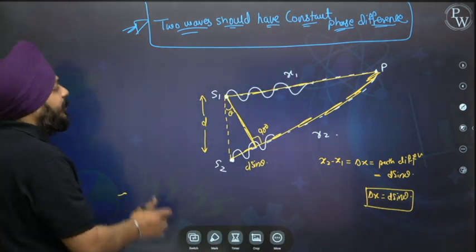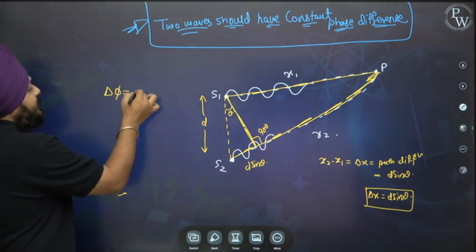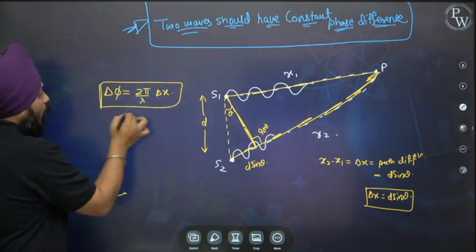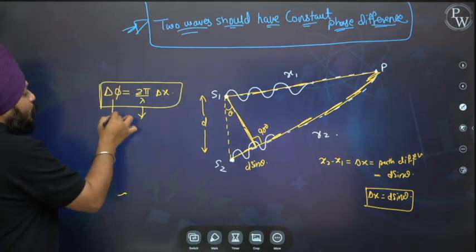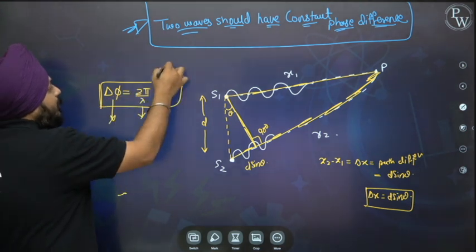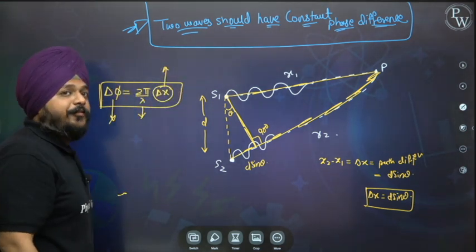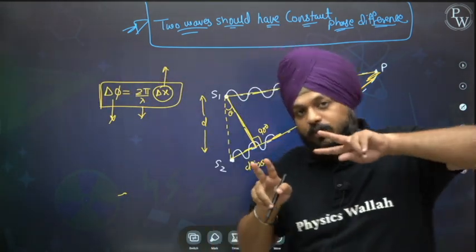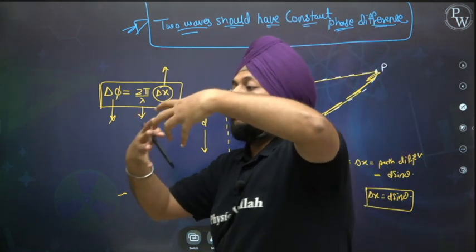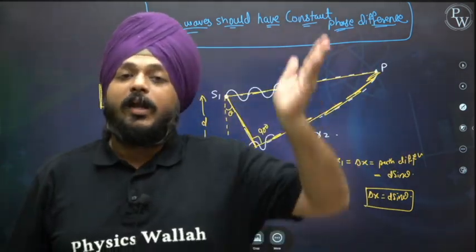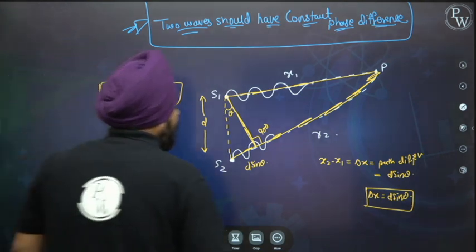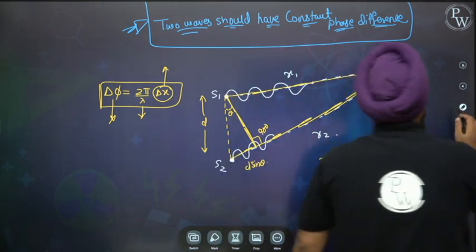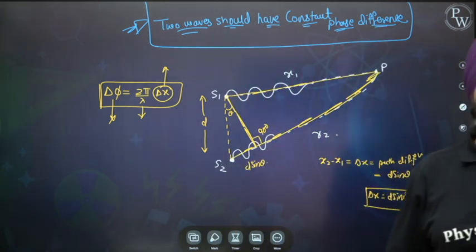According to the interference condition: delta phi = (2 pi / lambda) × delta x. For interference, a constant phase difference is required, so against a constant phase difference we need a constant path difference. Then and only then there is a possibility that the two waves interfering at the specific point are coherent.